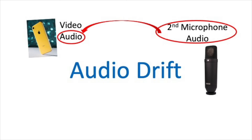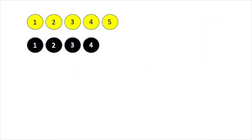So how does this happen? Let's play a little game. There's two teams: the yellow team and the black team. When the yellow team plays, they play five tokens — one, two, three, four, five. And when the black team plays, they play four tokens — one, two, three, and four.